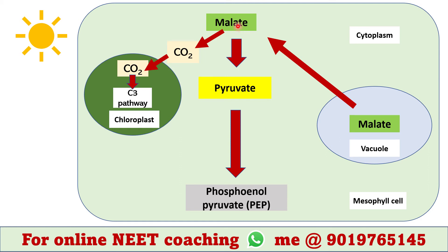In the cytoplasm, the malate is broken down to release carbon dioxide and a pyruvate. This CO2 then enters the chloroplast to undergo the C3 pathway for glucose generation. Pyruvate is converted to phosphoenol pyruvate again to initiate a new cycle.